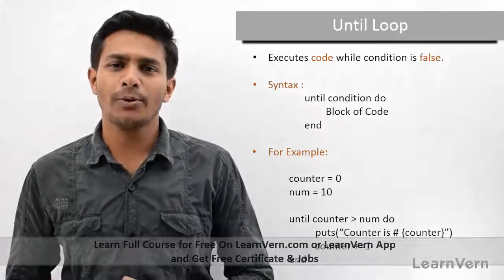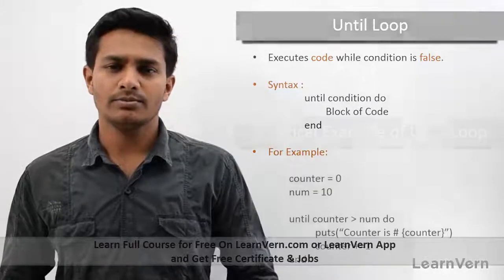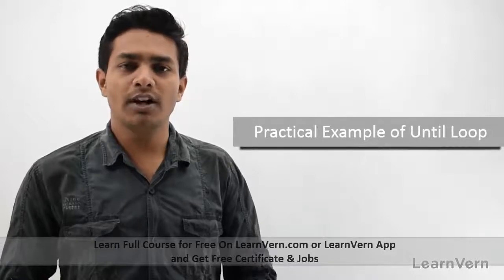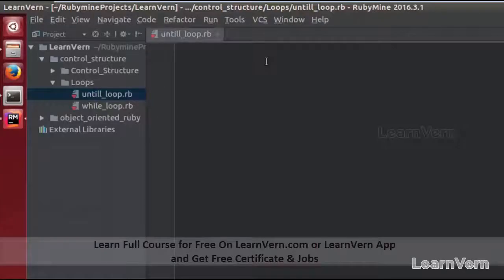So this is how we can work with until. Now we will see practical examples of until loop. Let's create my first variable that is number and I am assigning value 10, and second variable counter and assigning a value 0.